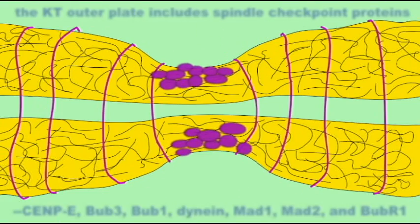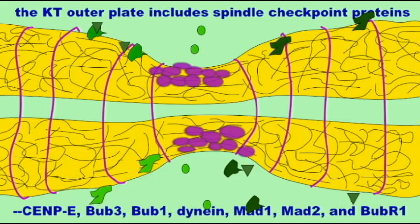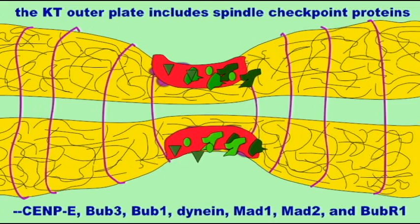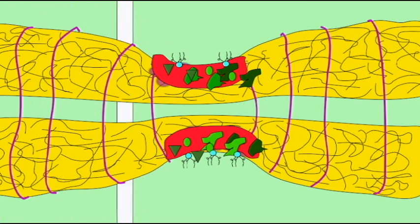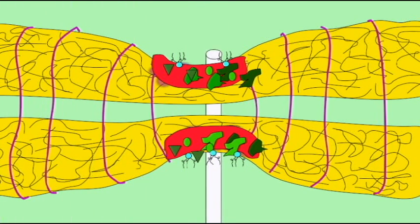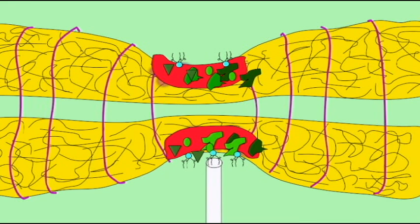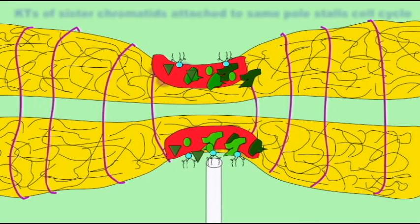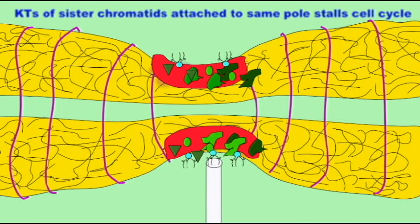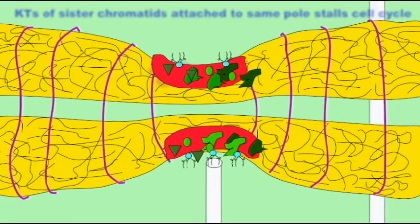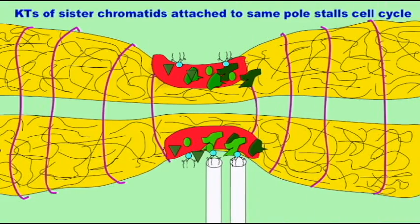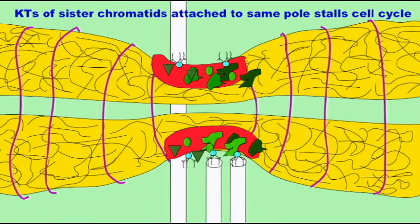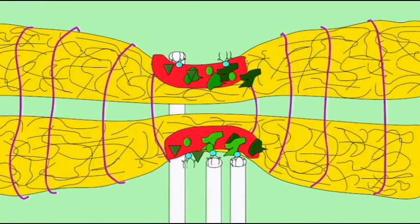This will also result if the two sister chromatids will be pulled to the same pole. There is not that tension at the kinetochores. This is abnormal, and once again, this would delay anaphase so that microtubules could be disengaged and new correct attachments could form, or this could eventually lead to apoptosis where this potentially abnormal cell would be destroyed rather than be allowed to propagate.